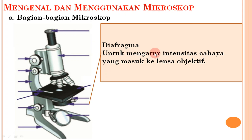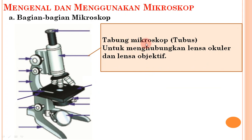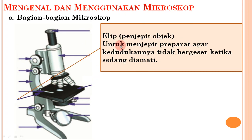Bagian mikroskop lainnya: cermin ada dua jenis, cermin datar dan cermin cekung, berfungsi mengarahkan cahaya pada objek. Cermin datar digunakan ketika cahaya sudah terpenuhi, sedangkan cermin cekung digunakan untuk mengumpulkan cahaya. Tabung mikroskop (tubus) untuk menghubungkan lensa okuler dan lensa objektif. Meja sediaan (meja preparat) sebagai tempat meletakkan objek atau preparat yang diamati; bagian tengah meja terdapat lubang untuk melewatkan sinar. Penjepit objek untuk menjepit preparat agar kedudukannya tidak bergeser saat diamati.